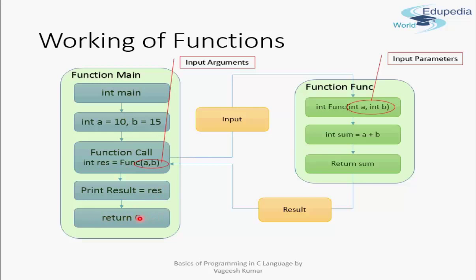There is also a return statement for the main function itself, since main returns an integer. We return zero from main, which by default signifies to the operating system that the program has executed successfully with no error. There may be other status codes used by convention, but for now, returning zero from main is the standard.